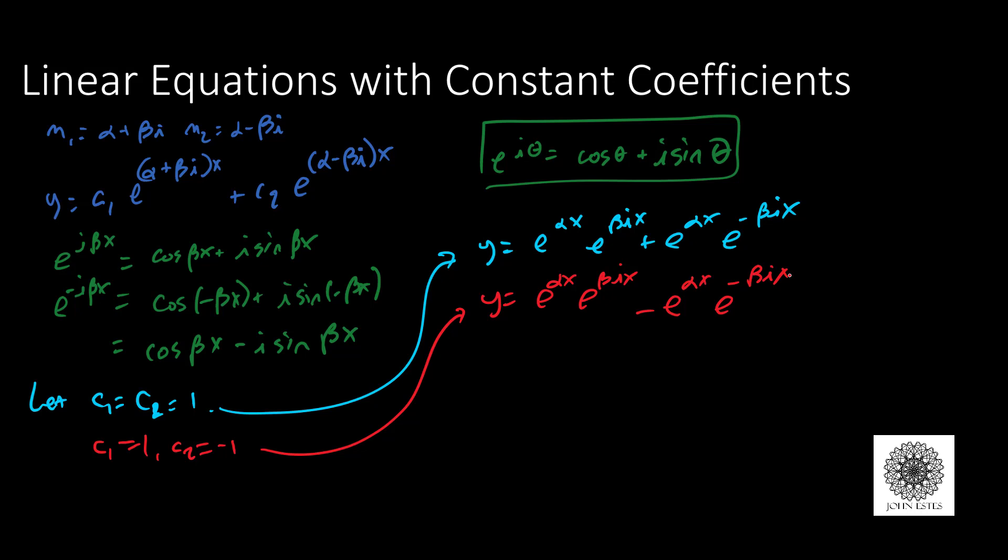This is useful because in my first equation I can take out an e to the alpha x and I'm left with e to the beta ix plus e to the negative beta ix. From my equation here, that's going to simplify to e to the alpha x times cosine beta x.